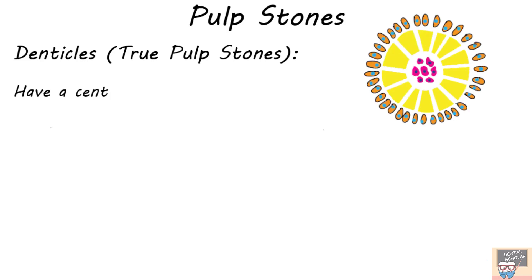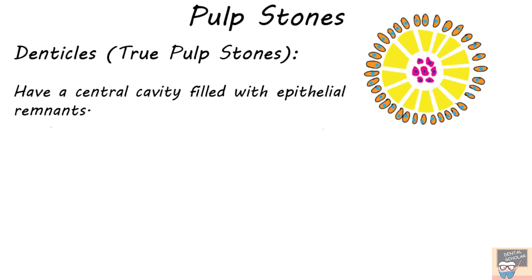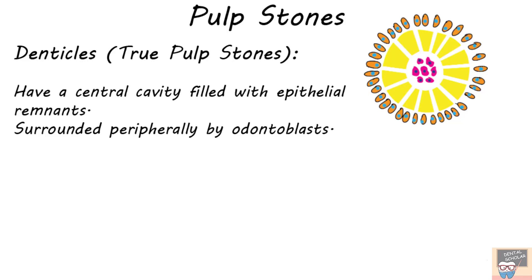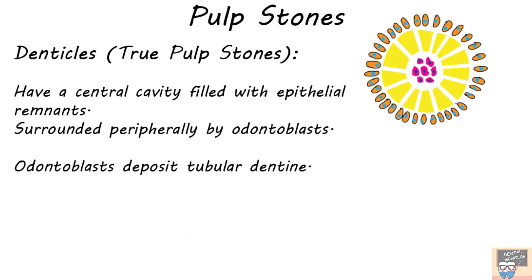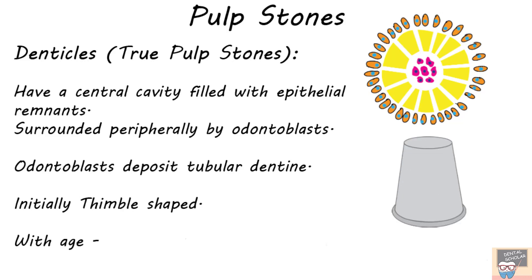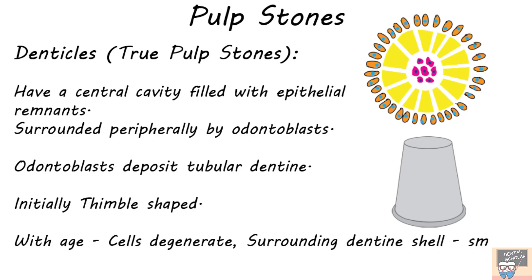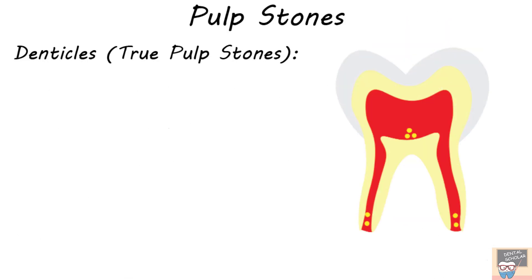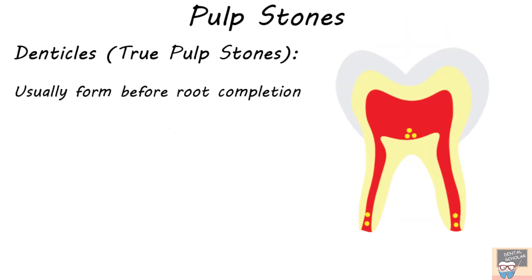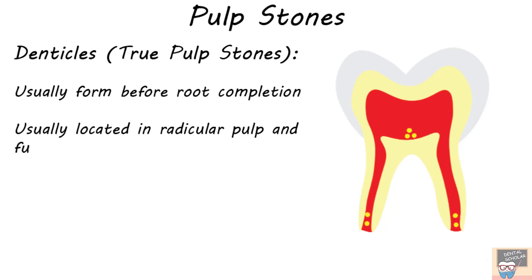The true pulp stones have a central cavity filled with epithelial remnants, and are surrounded peripherally by odontoblasts. Once the odontoblasts are differentiated from mesenchymal cells of the dental papilla, they deposit tubular dentine resembling normal dentine. True pulp stones are initially thimble-shaped, but with age the epithelial cells in the central cavity degenerate and the surrounding dentine shell becomes smooth due to continuous dentine deposition. True pulp stones usually form before root completion and are located in the radicular pulp and furcation area.